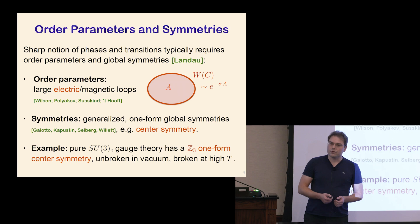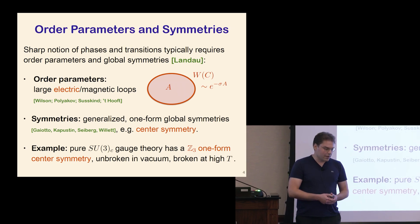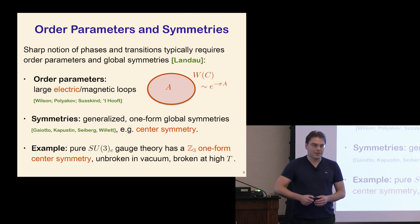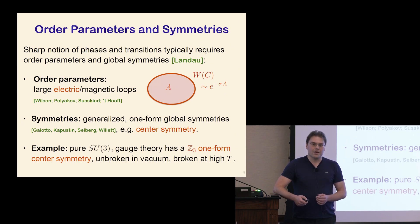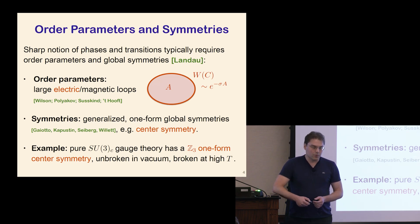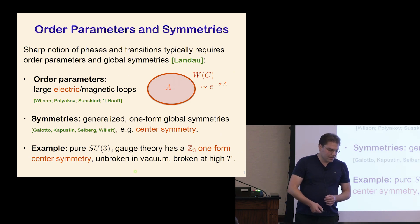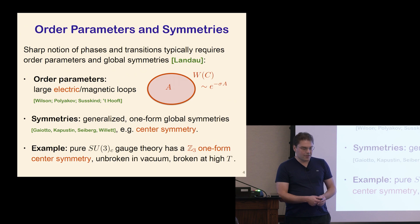In other theories there can also be interesting magnetic loops, for example in the theory of superconductivity. There's the famous area-law behavior of the Wilson loop, which decays exponentially in the confining phase of pure gauge theory, signaling that phase. The symmetry partner to these large loop order parameters are the generalized symmetries — particularly in four dimensions, the one-form symmetries that act on those loops.